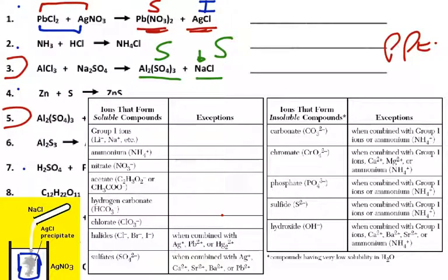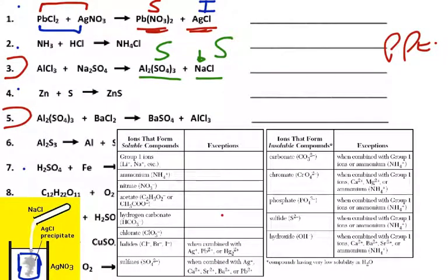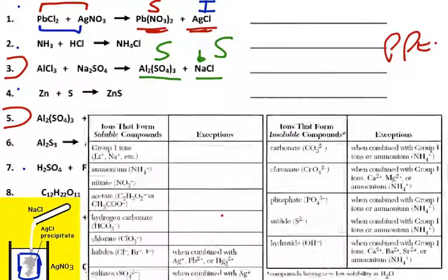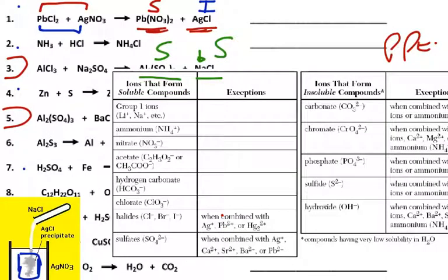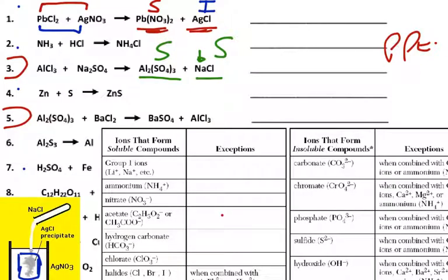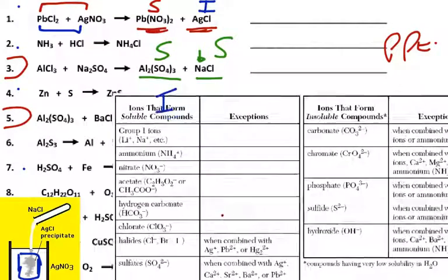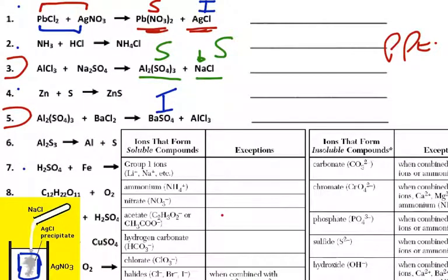Moving on to the last one: BaSO₄ and aluminum chloride — barium sulfate and aluminum chloride. We look for sulfates, which are in the bottom of the soluble column and are normally soluble. But in the exceptions, we see that barium is listed. So barium sulfate will be insoluble and will give you a precipitate. We then check aluminum chloride: chlorides are normally soluble, and aluminum is not an exception, so aluminum chloride is soluble.